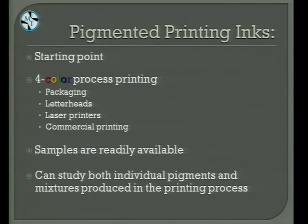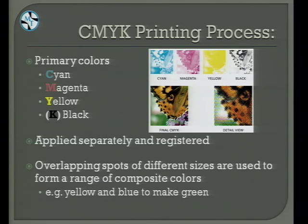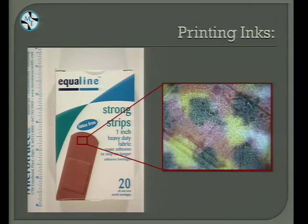Moving on to pigmented printing inks — this is a great starting point because there are very few pigments used in pigmented printing inks; it's a very constrained area. I'm talking about the four-color printing process: packaging, letterhead, laser printers, and commercial printing. Samples are readily available and we can study individual and overlapping pigments. The CMYK four-color printing process includes cyan, magenta, yellow, and black. They're applied separately and then registered, with overlapping spots creating composite colors like green from yellow and blue.